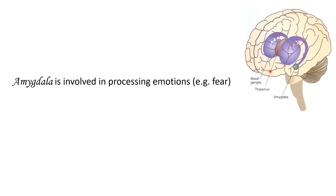The next structure we will look at in the forebrain is the amygdala. These are small, almond-shaped structures shown in green here, and they are involved in the processing of various emotions — particularly fear. So if something frightening is coming towards you, it is probably your amygdala that is active at that moment.